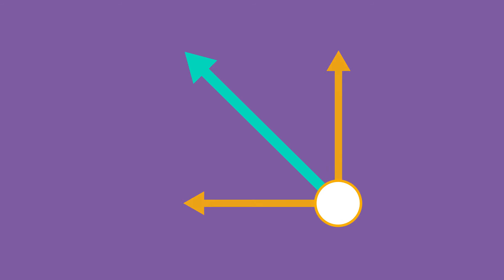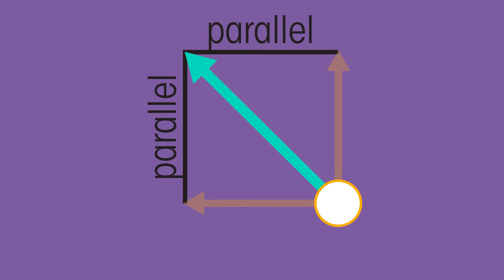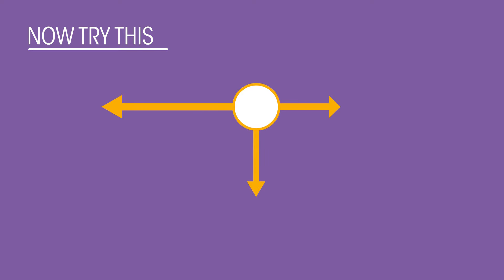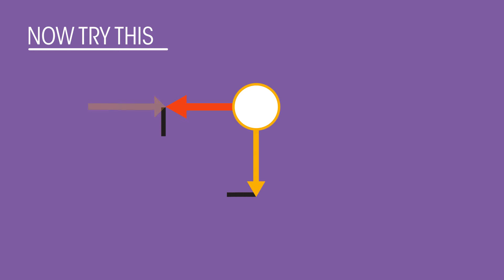Now you try. What direction do you think the resultant force will be here? Pause the video and have a go. The resultant force is obtained by drawing lines parallel to the forces to make a parallelogram or rectangle. First we need to find the resultant horizontal force, then draw the lines parallel to the forces to construct the resultant force. Did you get it right?